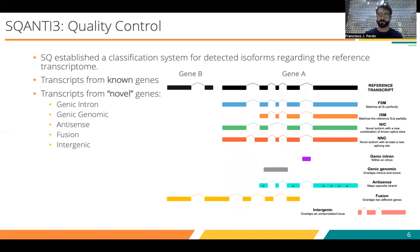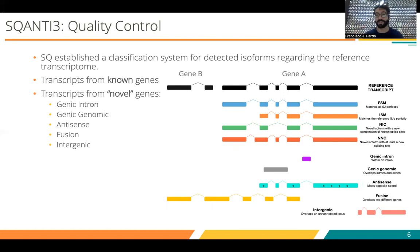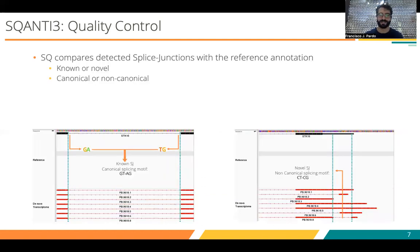About those transcripts that are mapping to intergenic regions or to kind of unusual locations, we created five different categories: genic intron, genic genomic, antisense, fusion, or intergenic. These are what we call transcripts from novel genes. Even though, for example, in fusion genes, it's not an actual novel gene — it's just a combination of two genes that are being expressed in one transcript.